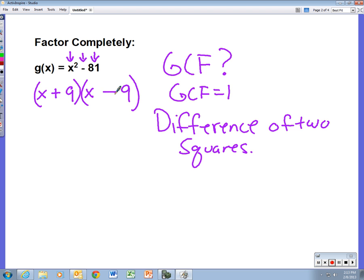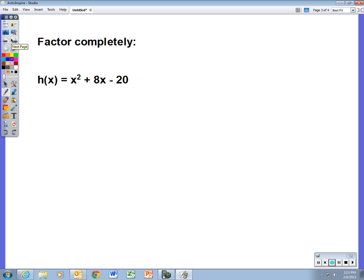The next one, we have x squared plus 8x minus 20. Now there's nothing special about this one. This is just an ordinary trinomial that we need to factor. Do note that the a in front of x squared is a 1.